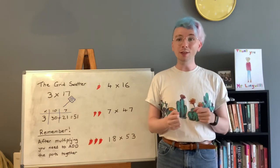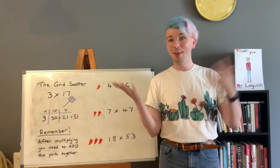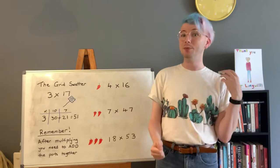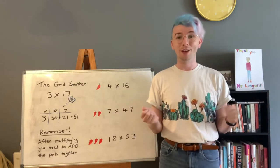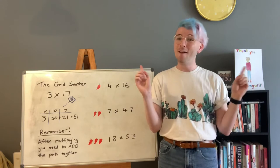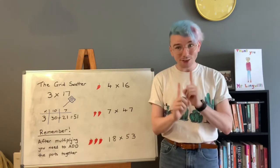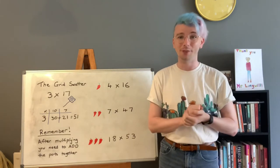So what is 3 times 10? 30. And what is 3 times 7? 21. What is 30 plus 21? 51. Which is the answer to 3 times 17.